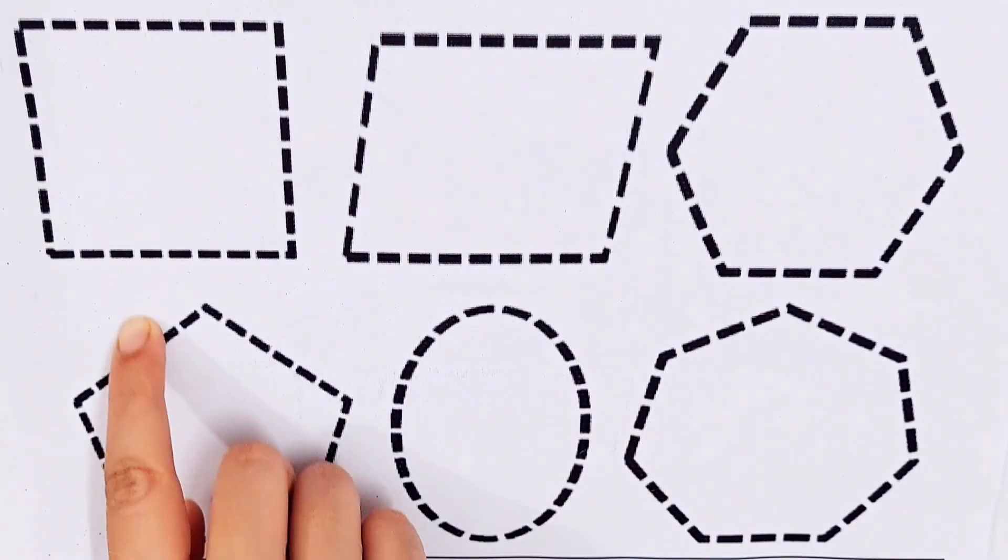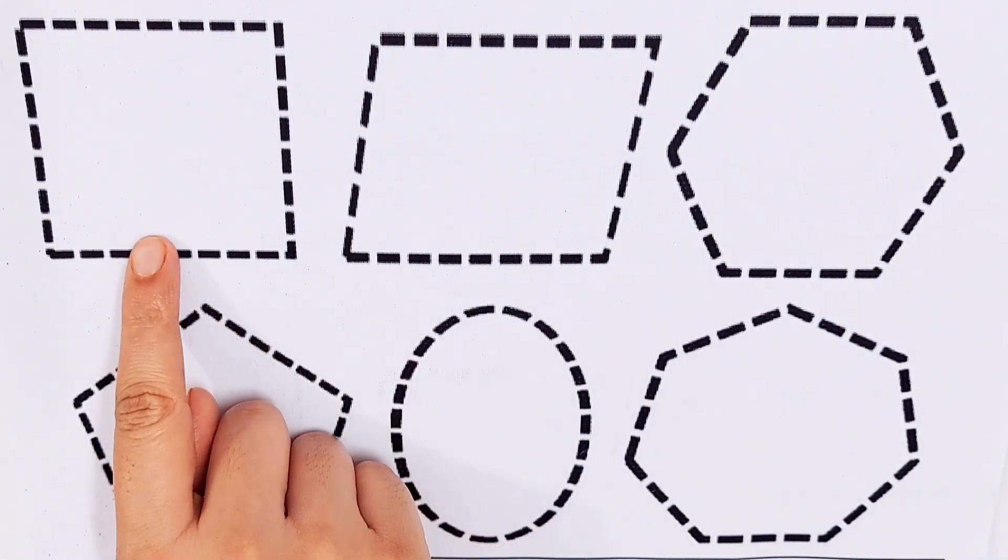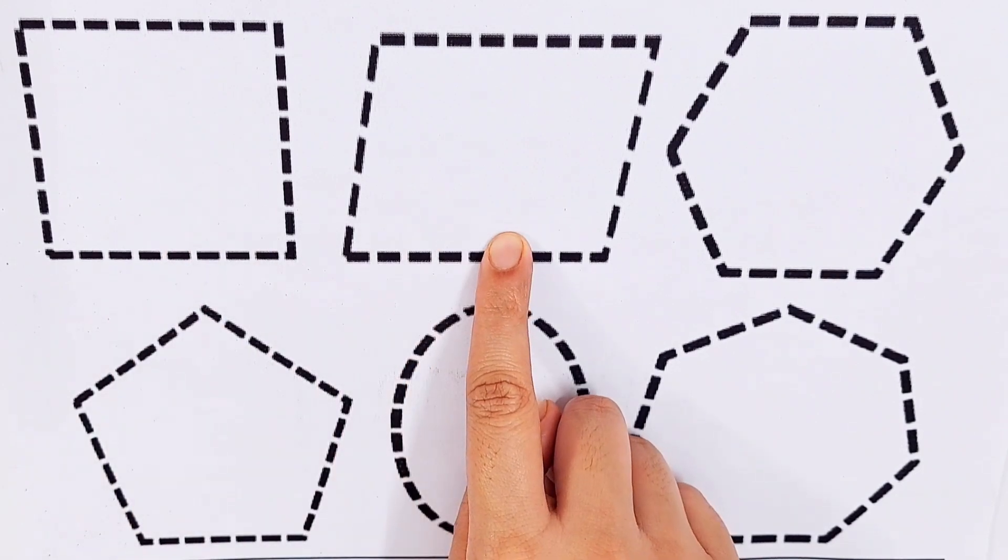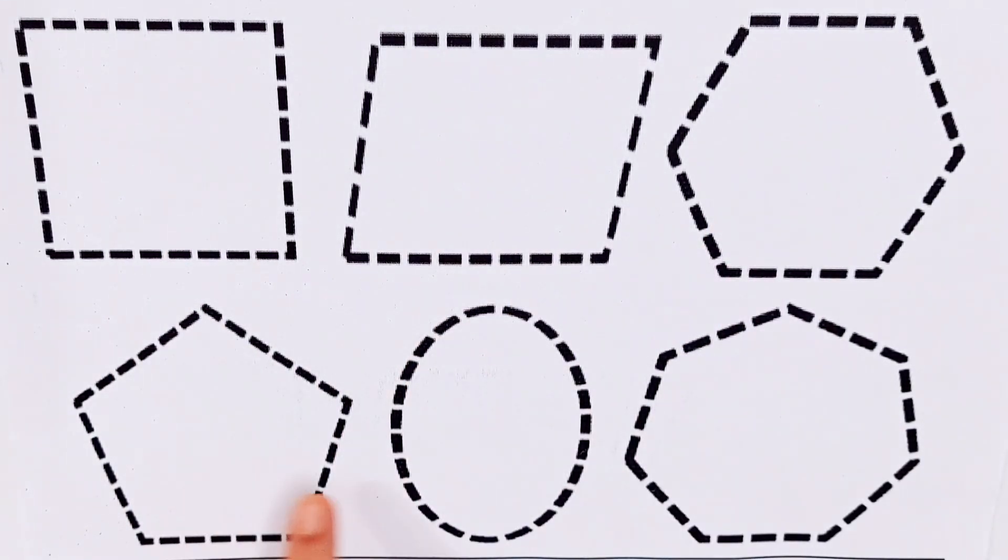Let's try to draw some 2D shapes: square, parallelogram, hexagon, pentagon, oval, heptagon.